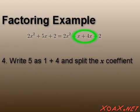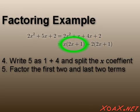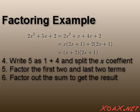At this point, we break the linear term into 1 and 4, and factor the first two and last two terms separately, to get x times the quantity 2x plus 1, plus 2 times the quantity 2x plus 1. Notice that we have a 2x plus 1 term that we can factor out. Once we do this, we have our final factorization, x plus 2 times 2x plus 1.